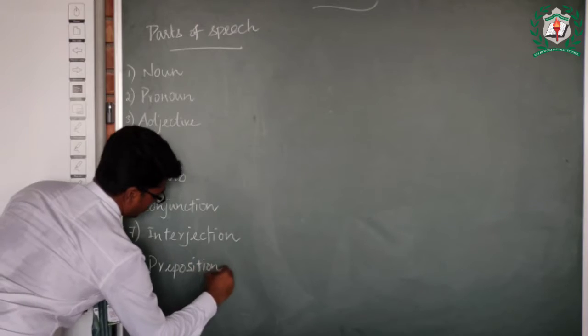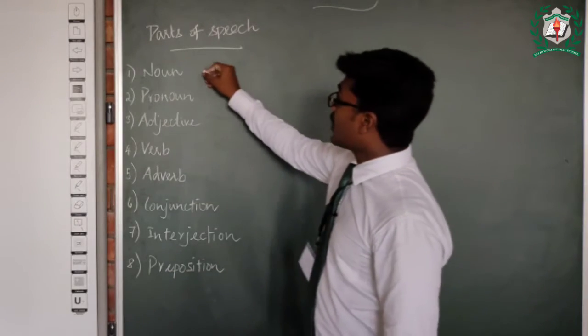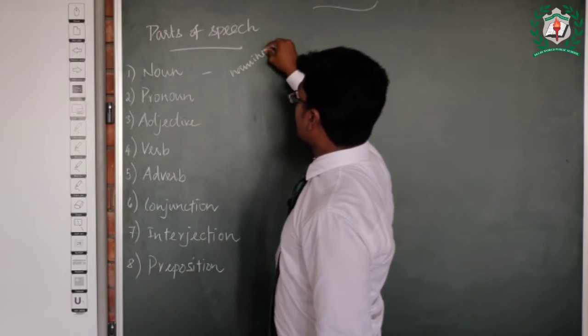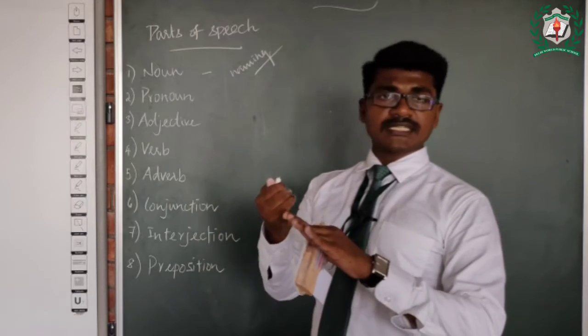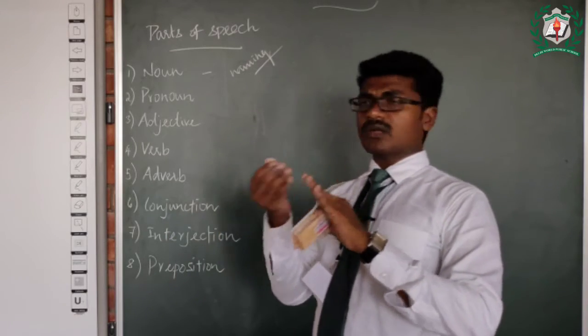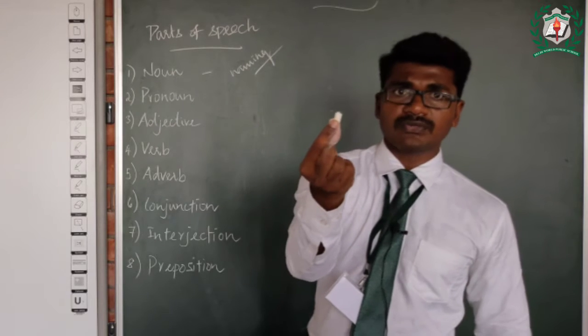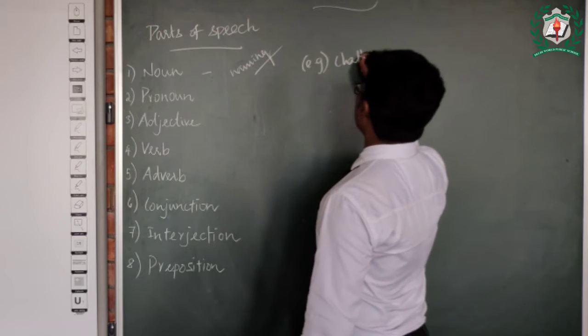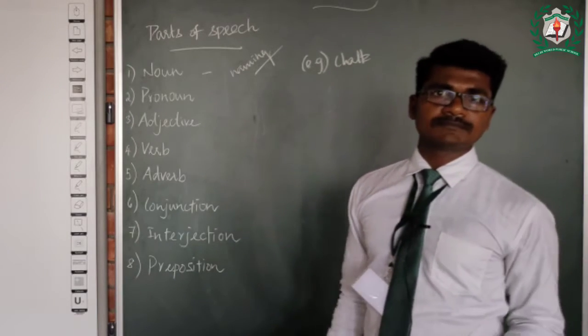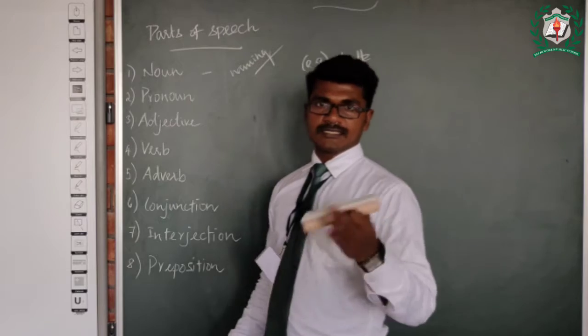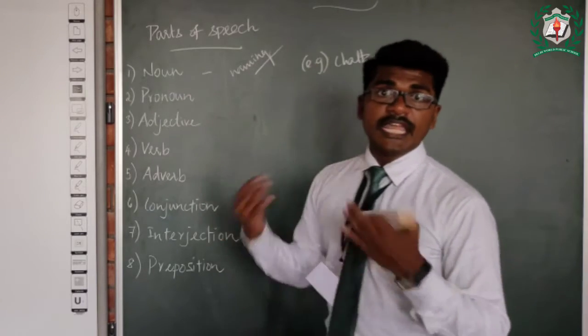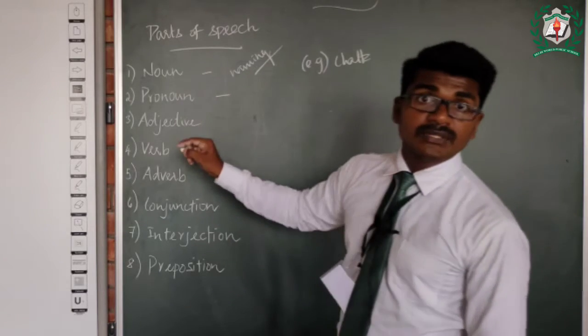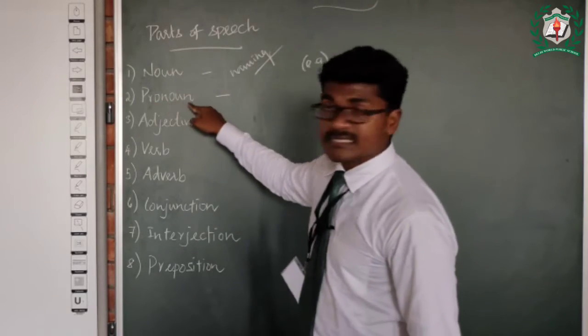So let's see an example now. What is noun? Naming. Just give a name for a person, place, animal, or thing. Example, in front of you, chalk. It's a thing. Think of an animal, example lion. So naming of a word is called noun.